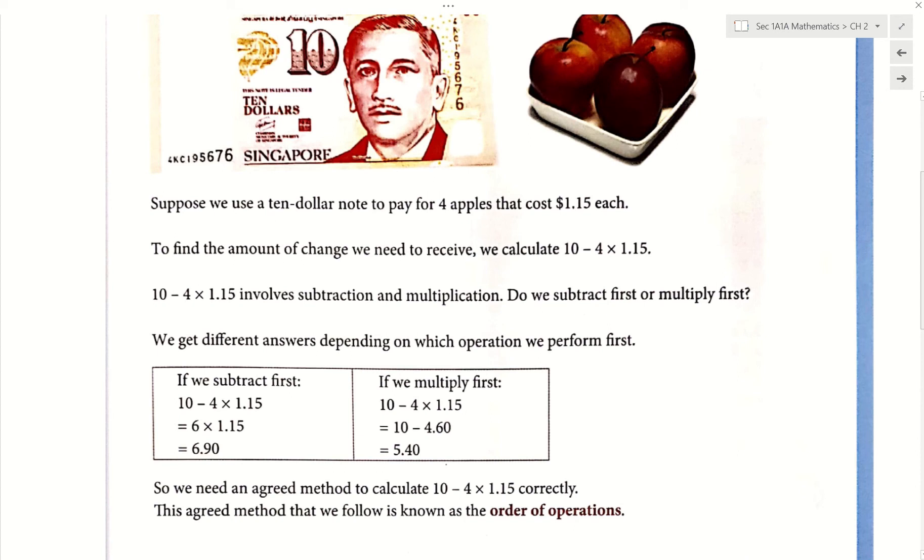We use a $10 note to pay for four apples and each apple costs $1.15. To find out how much change we are going to get, I'm sure you know how to do it. $10 minus four times $1.15. Here it is written 10 minus 4 times $1.15.